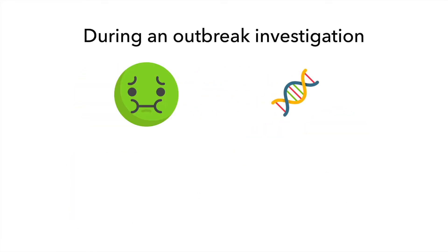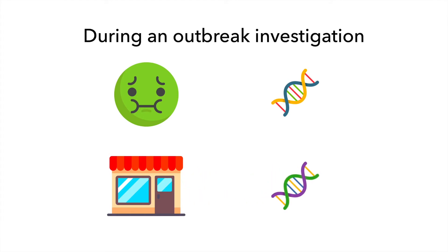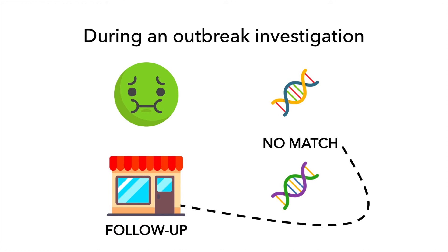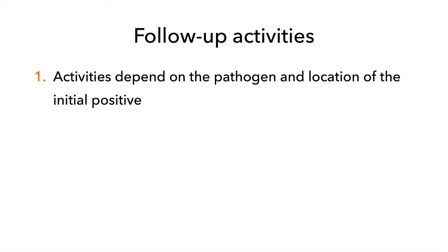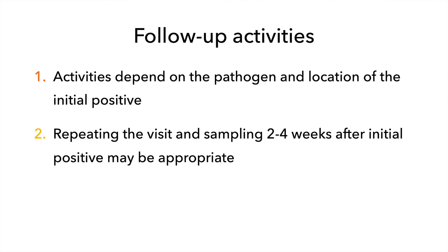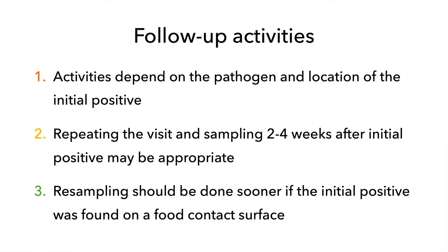But what if the pathogens found do not match? During an outbreak investigation, if a pathogen is found in a facility but it does not match the isolate from a patient, the facility will still need to perform a deep clean and sanitize and conduct follow-up activities. These activities depend on the pathogen and location where the initial positive result was found. Repeating the visit and sampling two to four weeks after initial positives may be appropriate to ensure control measures worked. Resampling should be conducted more quickly if the initial positive was found on a food contact surface.